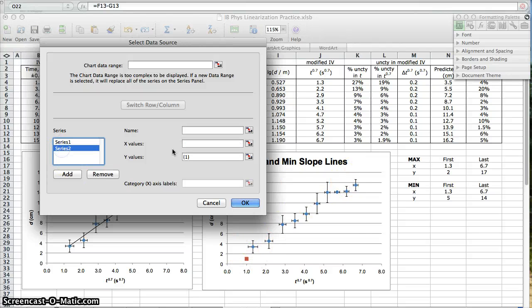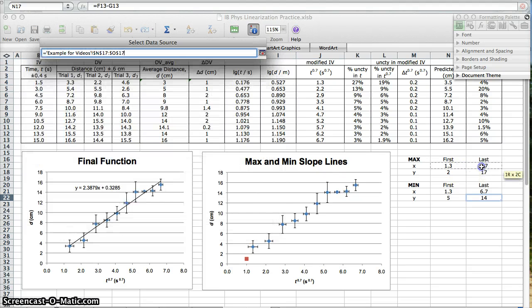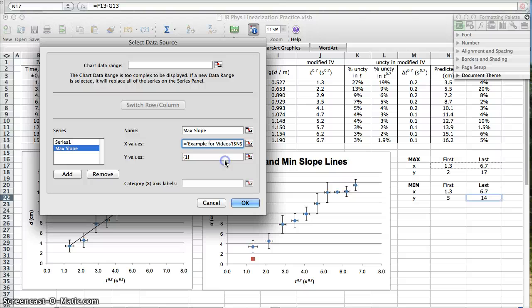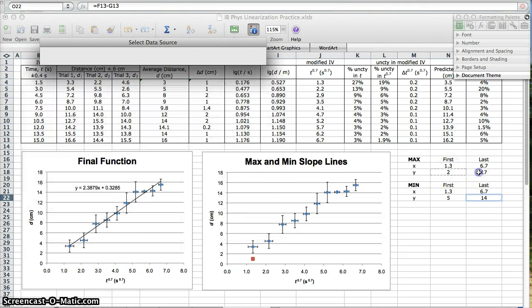Add another x, y series. Call this one max slope. The x values are these. Here, for max. Then, get rid of this one. You have to delete it. Choose the y values for the max slope line.